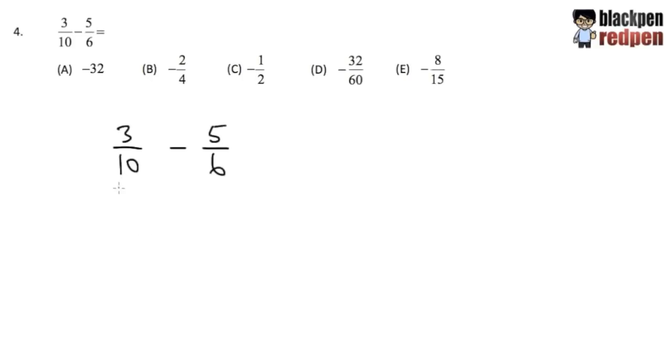Okay, for question number 4, we are going to subtract fractions. Here we have 3 over 10 minus 5 over 6. What do we need first? You need to tell me we need to make sure that they have the same denominator. Unfortunately, we have 3 over 10 minus 5 over 6. The numbers on the bottom are different, so we cannot do anything at the moment.